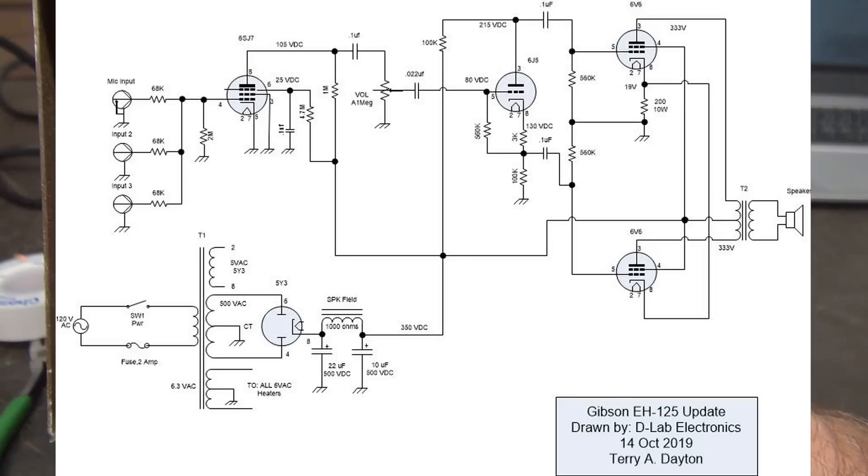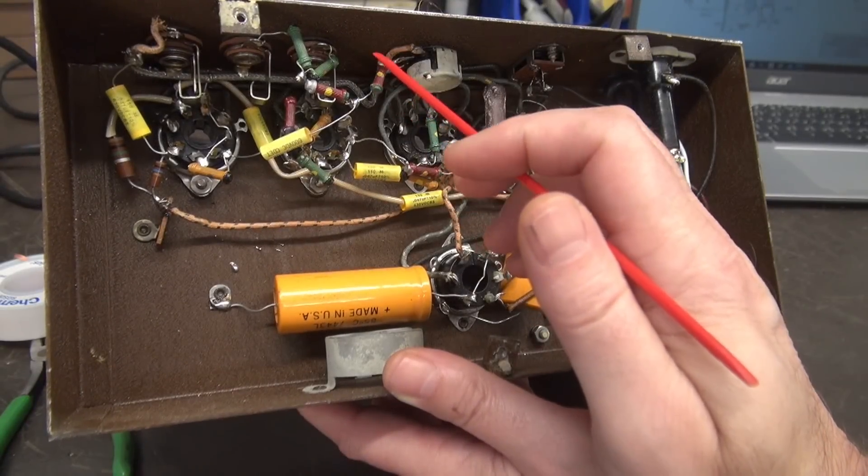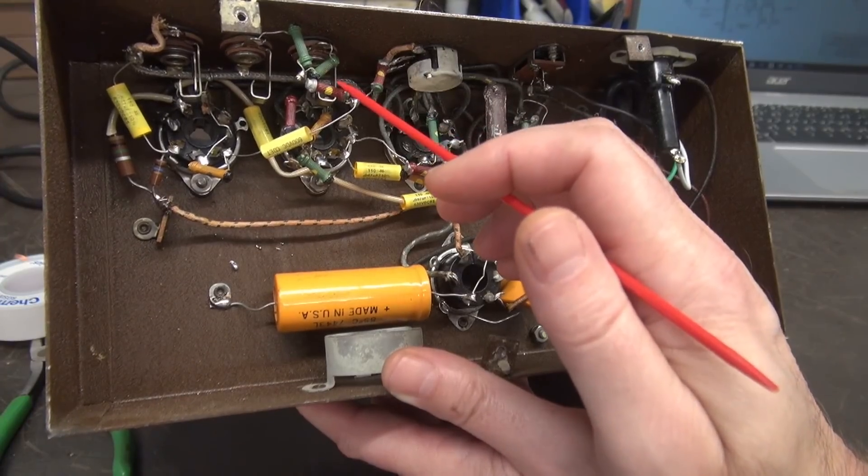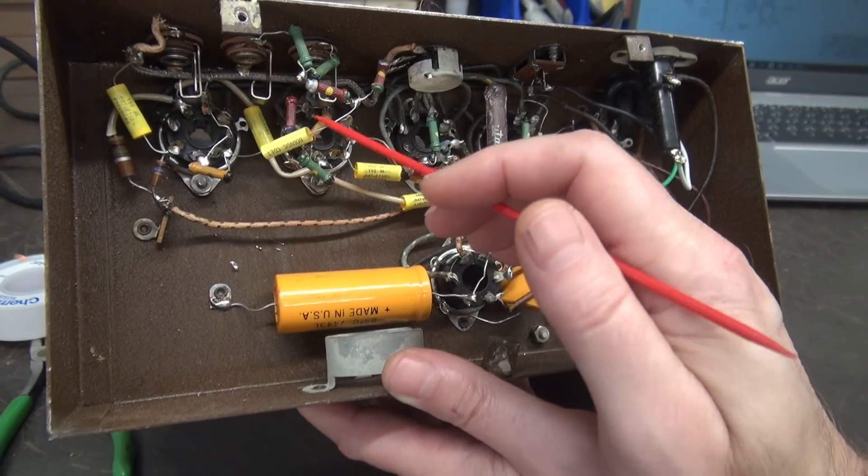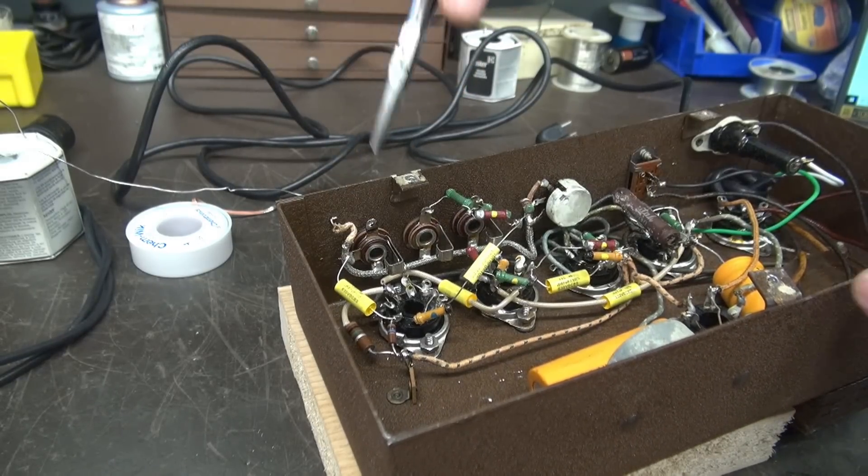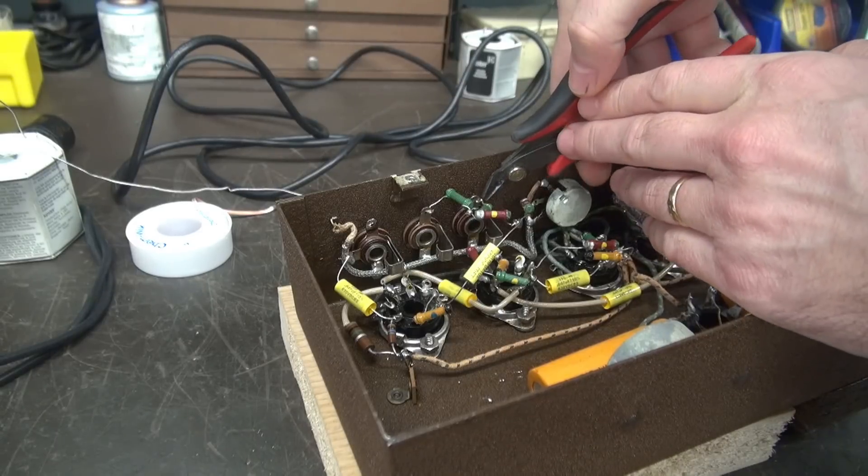Then the output of the SJ7 is going to go through a capacitor to the high side of the volume pot, will ground the low side of the pot, and then the center conductor of the volume pot will go to pin 5 of the 6J5 inverter tube.